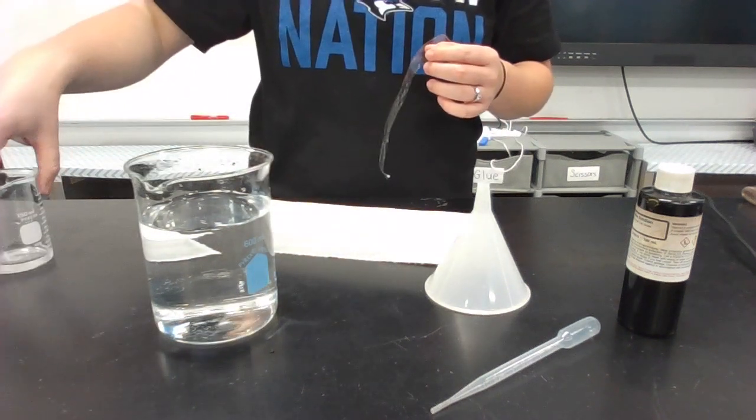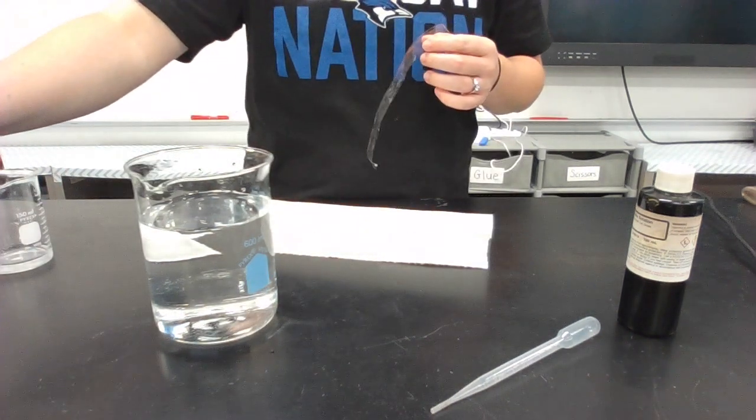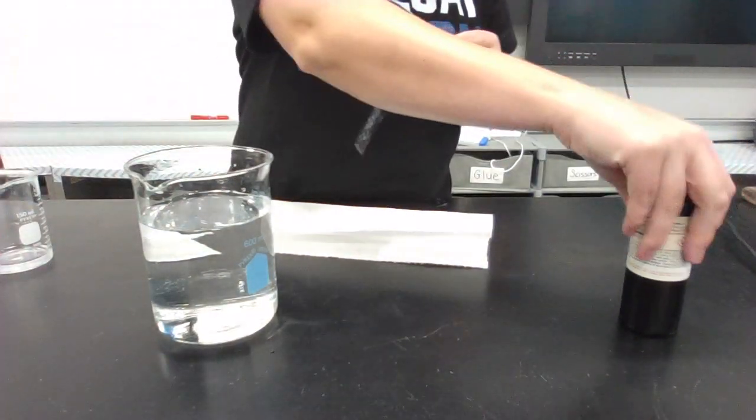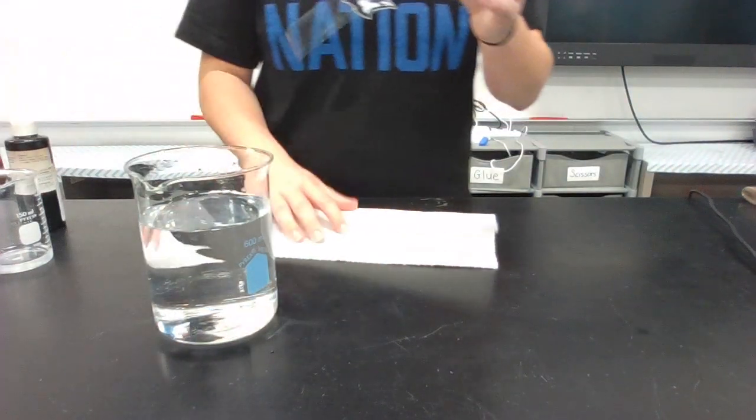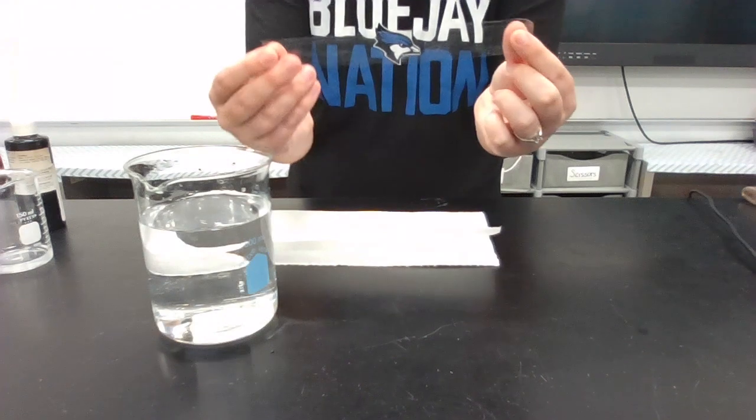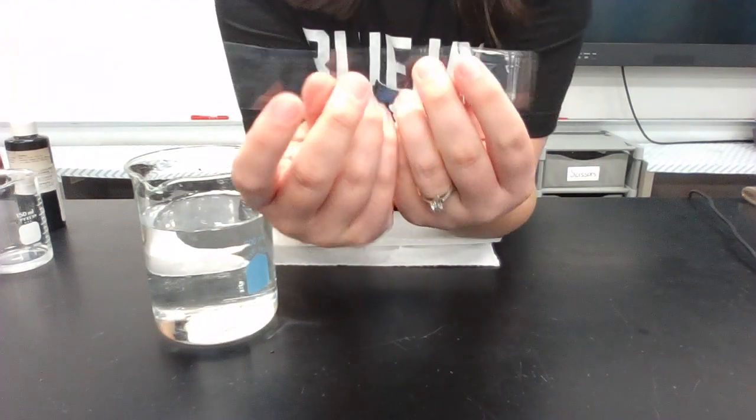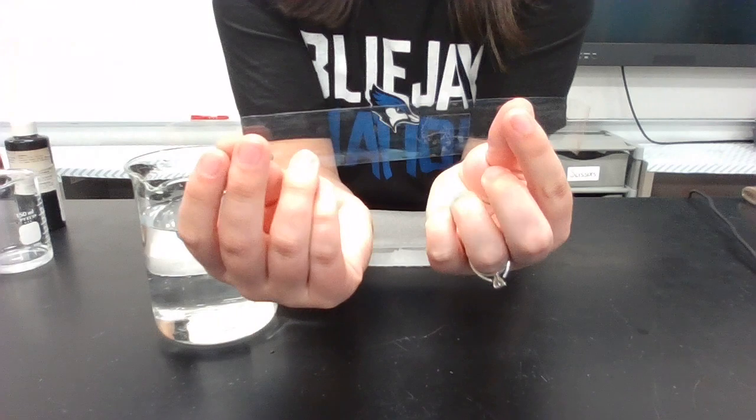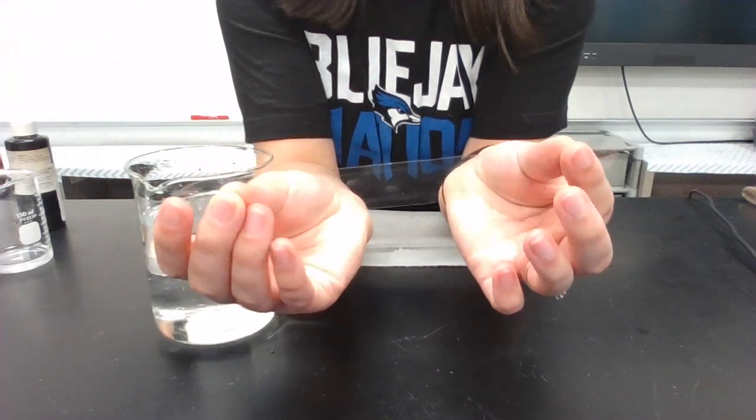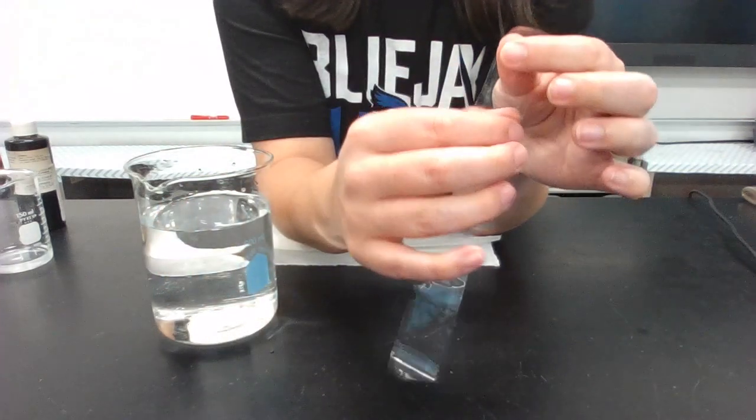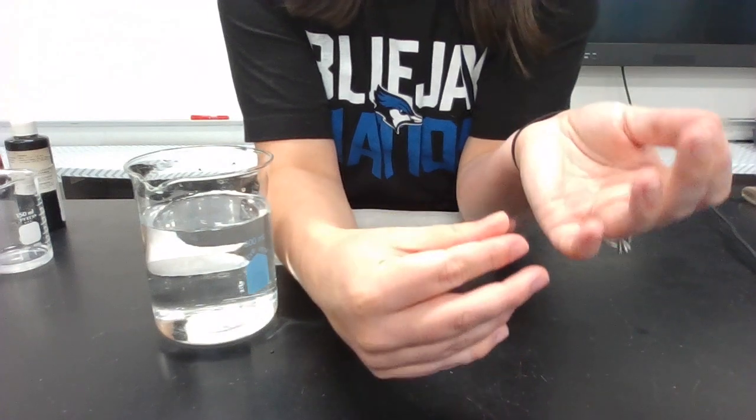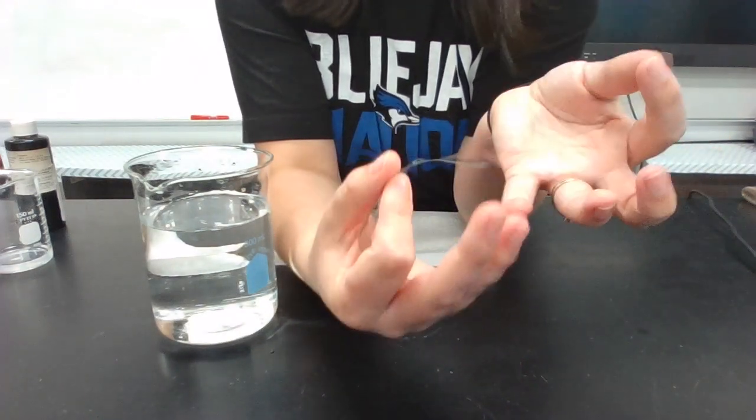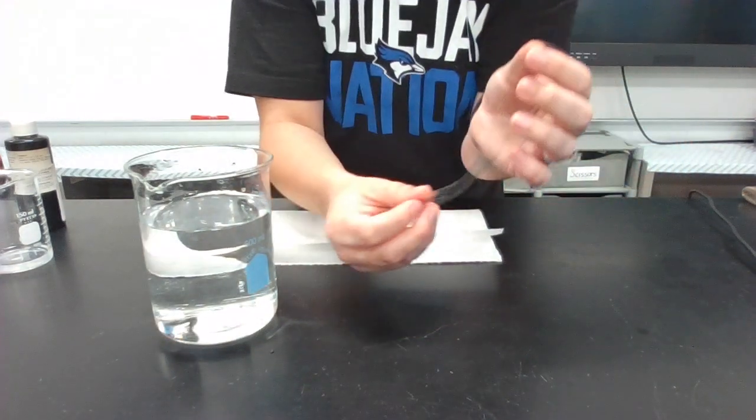So let me move these out of the way. What I did was I took the dialysis tubing and cut a small section off. You can hear the crunch of it. It's not a very pliable material, but if you know anything about dialysis, that's whenever you clean the blood because you filter the blood. Your kidneys don't do a very good job of it.